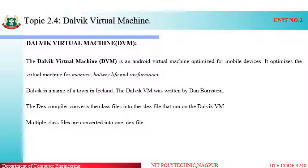Optimization means the best use of our resources. The most important resources are memory, hardware, software, efficiency, and battery life. Battery life is the most important aspect in case of mobile devices, along with performance. Dalvik is the name of a small town in Iceland, a country in Europe, and the Dalvik Virtual Machine was written by Dan Bonstein.